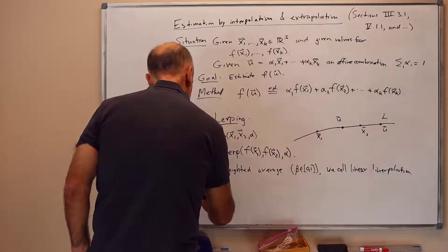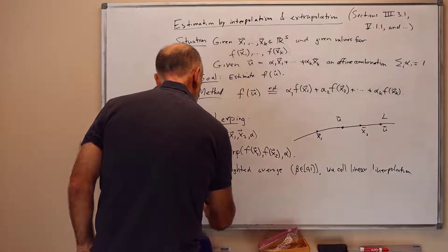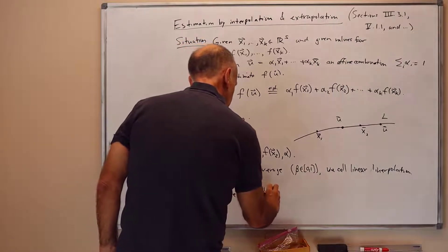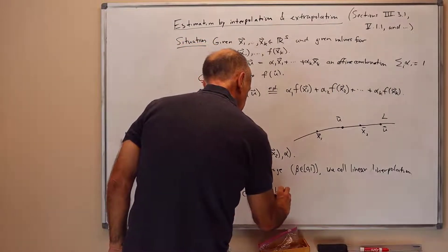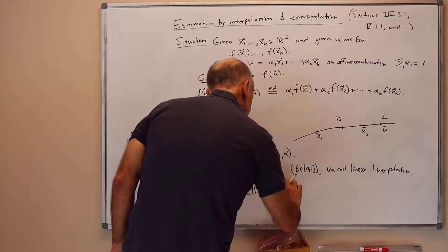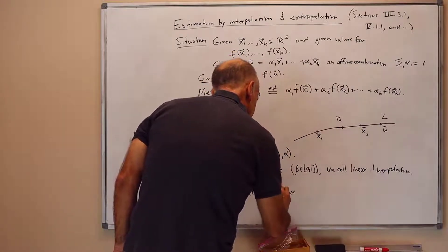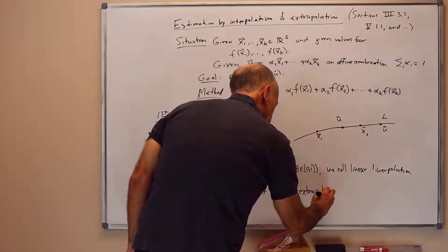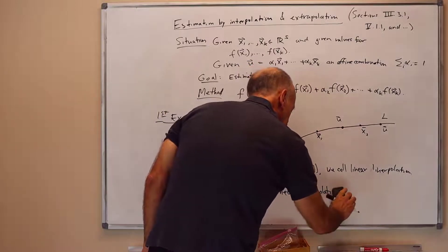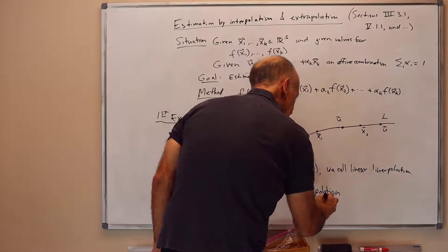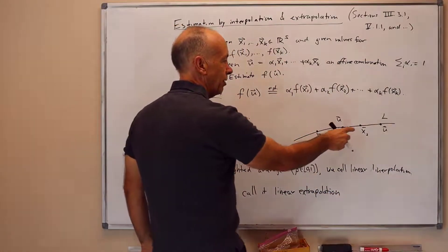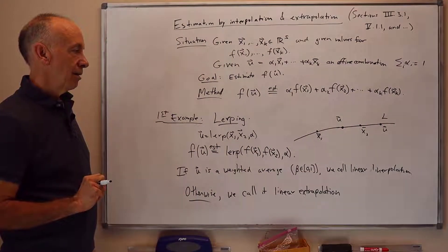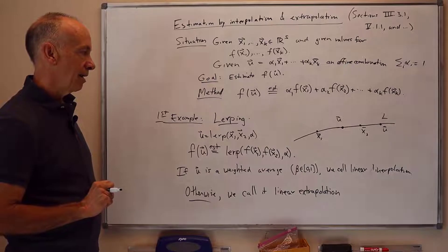Otherwise, when u is an affine combination but alpha is outside the interval [0, 1], we call it linear extrapolation. So we're extrapolating values: knowing f(x1) and f(x2), we extrapolate to some point u outside that line segment to estimate a value for f outside that range.